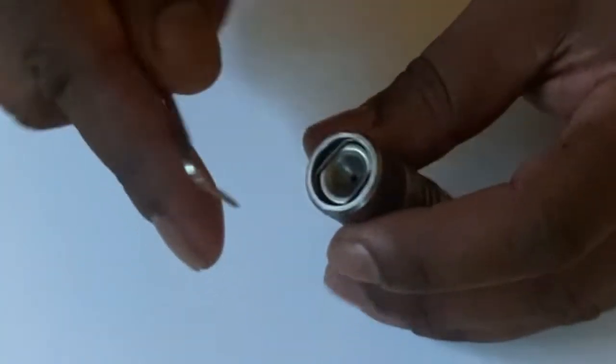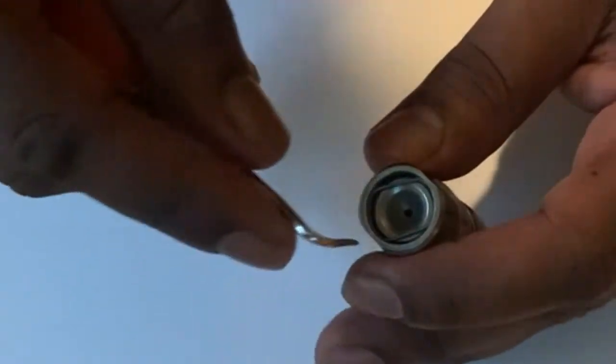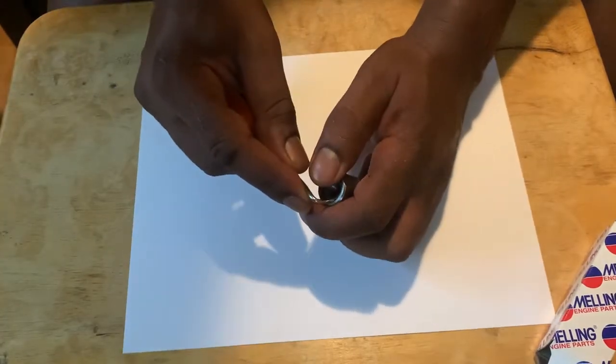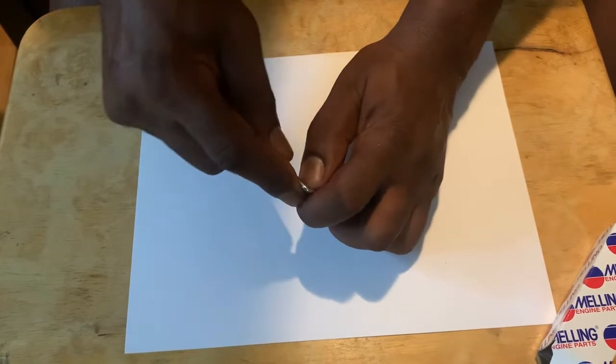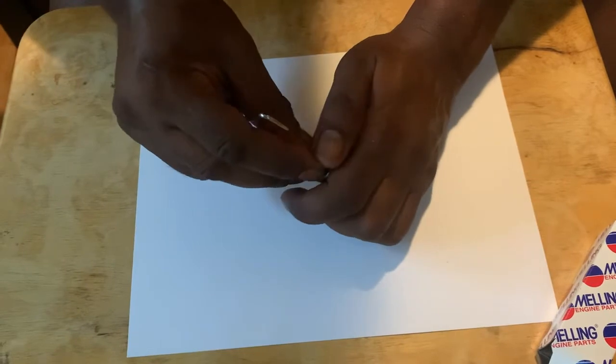I did one already, so we're going to do this one. First thing is that little clip—you can see that little clip at the top. Be careful because it will fly out. We don't want it to shoot all over the place.